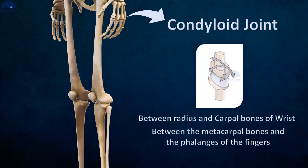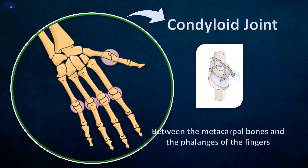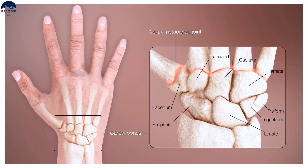Condyloid joints: These joints consist of an oval-shaped end of one bone fitting into a similarly oval-shaped hollow of another bone. This is also called an ellipsoidal joint. For example, the joints of the wrist and fingers. We can move both side to side and up and down.